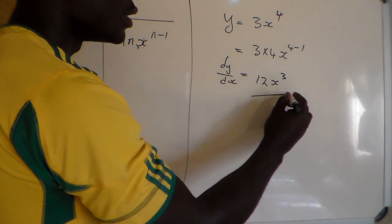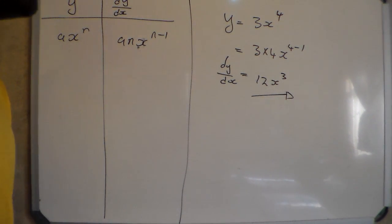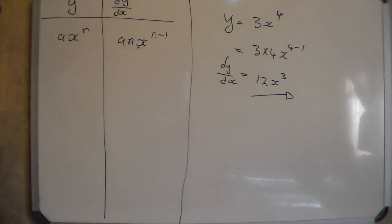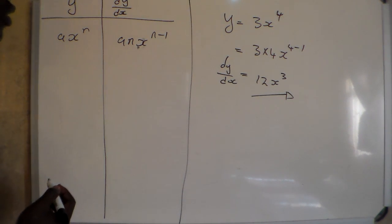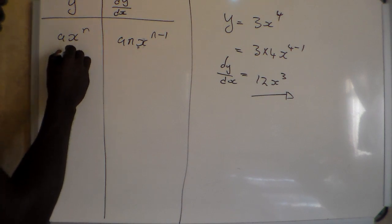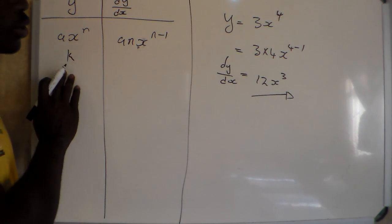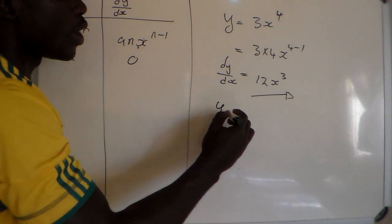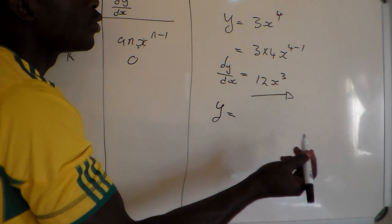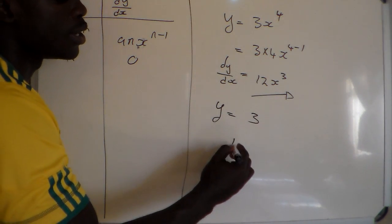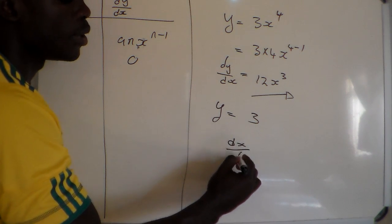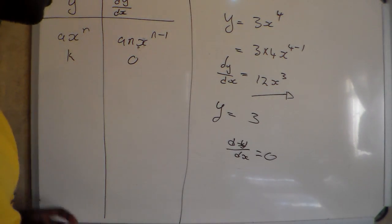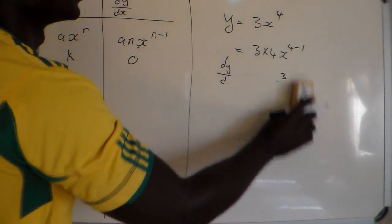Now for the derivative of a constant number. We know that if we derive a constant number k, it always equals 0. So if we have to derive y equals any constant number, maybe 3, then dy/dx will be equal to 0. The derivative of a constant is always zero.